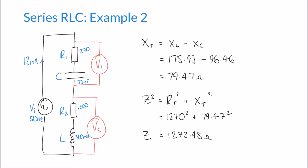Our impedance also has a phase angle, calculated using trigonometry: angle = tan⁻¹(X_total / R_total) = tan⁻¹(79.47 / 1270), which comes out to 3.58 degrees.